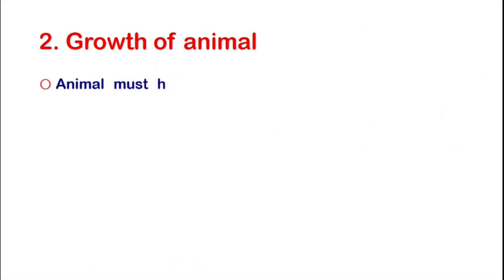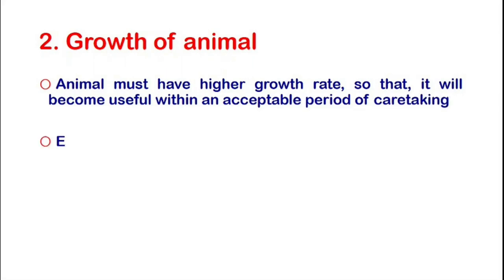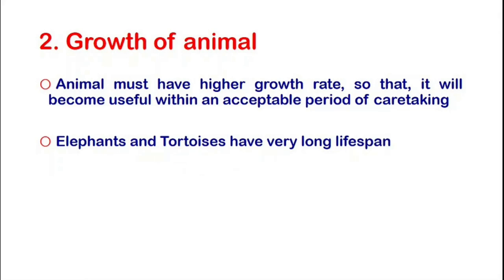Growth Rate of Animal. An animal must have a higher growth rate so that it will become useful within an acceptable period of caretaking. Some animals like elephants and tortoises have very long lifespans. It took 10 to 20 years for a tortoise to become sexually mature, and similarly 10 to 14 years are required for an elephant to become mature. So they are not suitable for domestication.